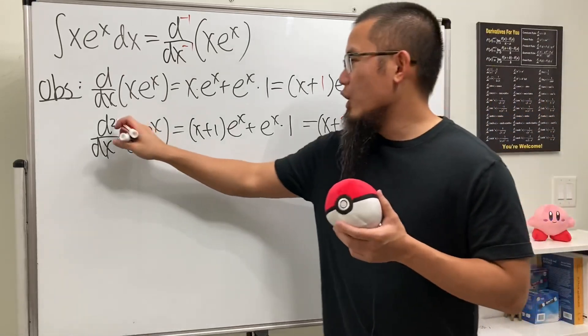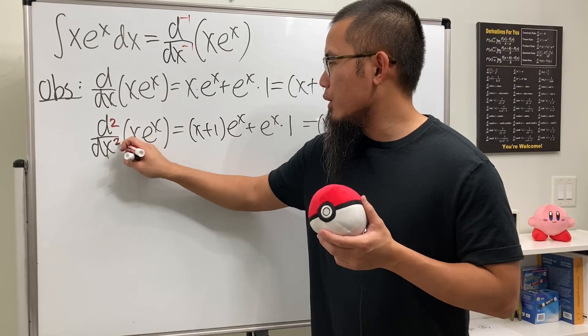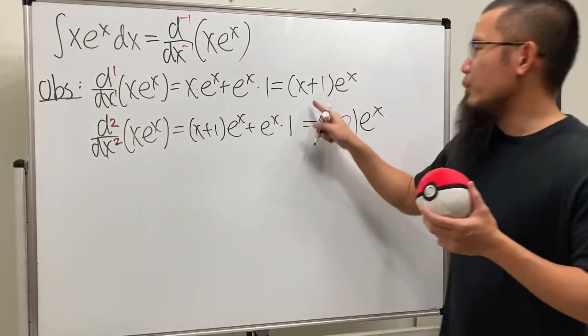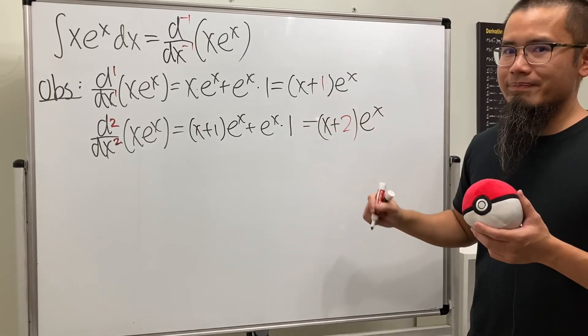And as you can see, when we are talking about the second derivative, this is x+2. And earlier, it was the first derivative, and we had x+1. Well, let's do one more time.